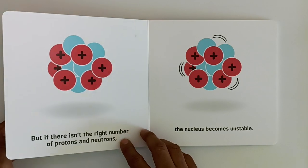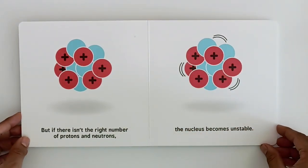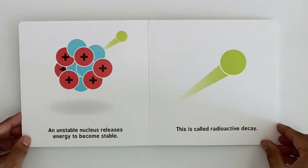A nucleus is stable when it has just the right number of protons and neutrons. A stable nucleus stays like this forever. But if there isn't the right number of protons and neutrons, the nucleus becomes unstable. An unstable nucleus releases energy to become stable. This is called radioactive decay.